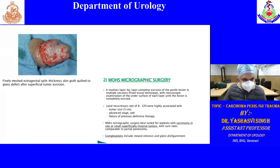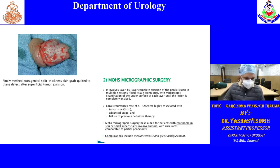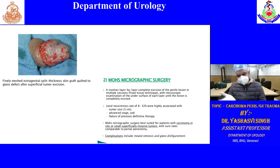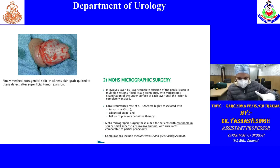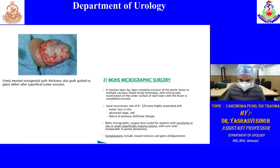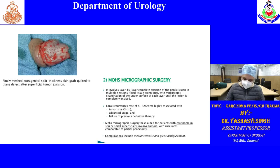After glansectomy, a split-thickness graft is placed over the defect. Mohs micrographic surgery involves slicing the tumour layer by layer; after each slice, the undersurface is examined microscopically for residual carcinoma. The excision stops at the layer where no tumour is found on the undersurface. This is layer-by-layer complete excision with microscopic examination of each layer until complete excision is achieved.